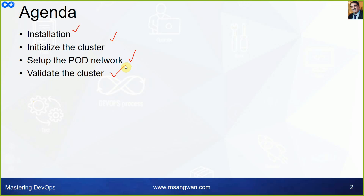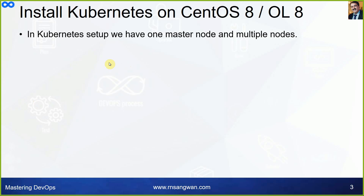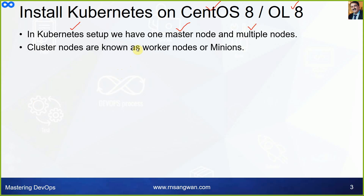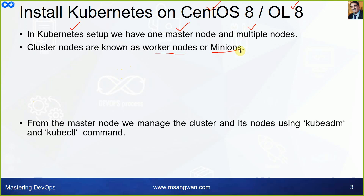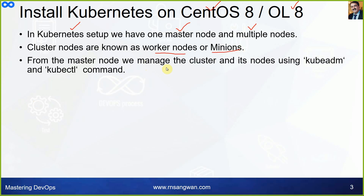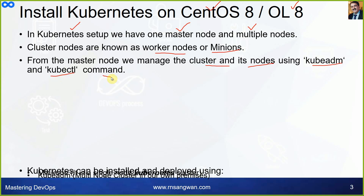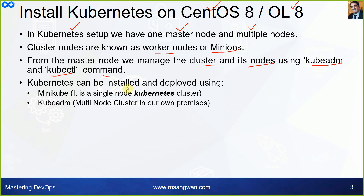We will install Kubernetes on CentOS 8 or Oracle Linux 8. In a Kubernetes setup we have one master node and multiple worker nodes, also known as minions. From the master node we manage the cluster and its nodes using kubeadm and kubectl commands.